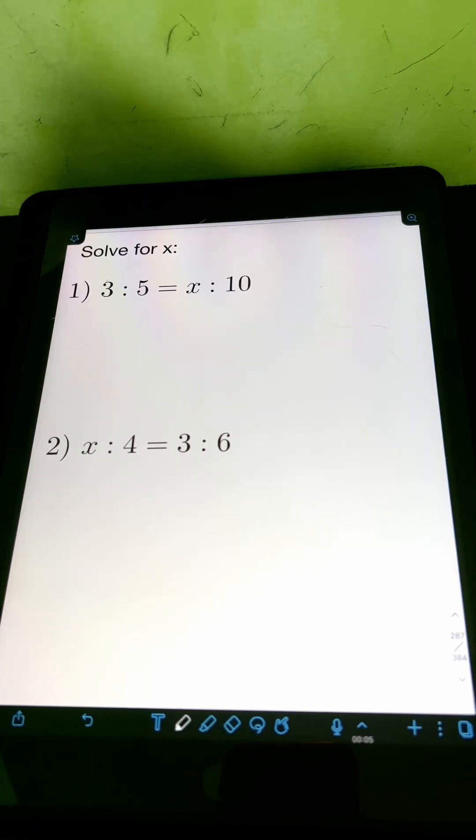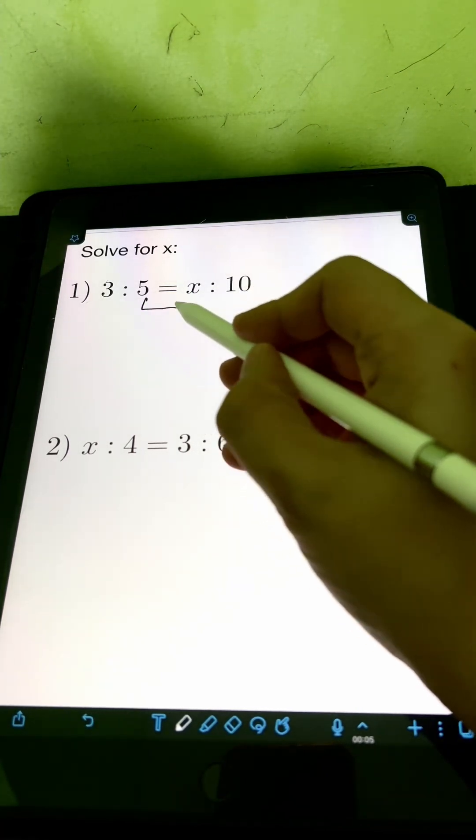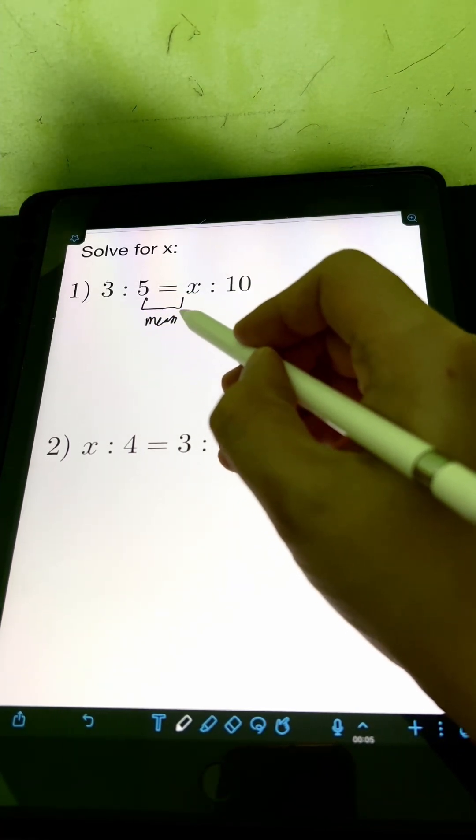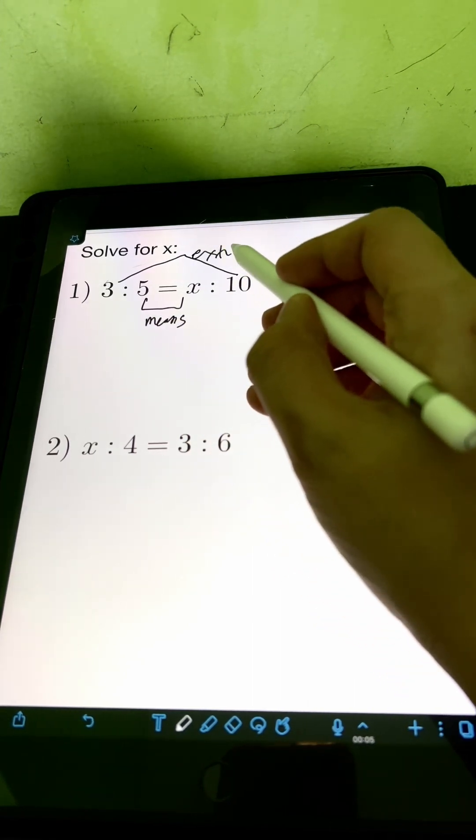Let us solve this problem. Solve for x for number 1, 3 is to 5 is equal to x is to 10. Okay, so we have ratio and proportion. So to solve for x in this ratio and proportion, we must equate the product of the means and the product of the extremes.